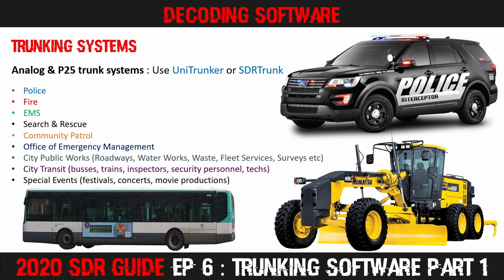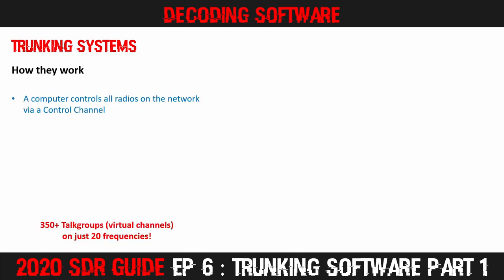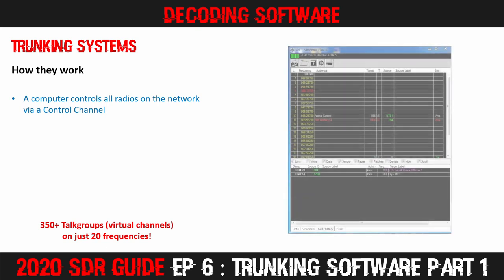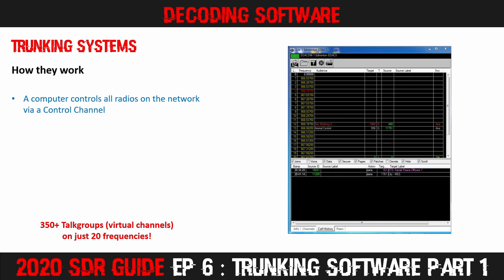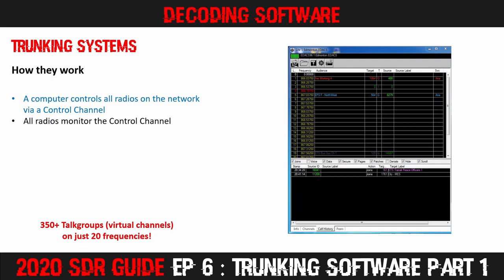So there's an awful lot that you can hear on a trunked radio system. Basically, these systems are run by computers, which broadcast information to all radios on the network through a control channel. LCN number 4, frequency 866.7875 MHz, is highlighted in red, indicating that it is the active control channel. If you were to tune an SDR or scanner to that frequency, this is the sound you would hear. That's the sound of the computer controlling all the radios logged onto the system.